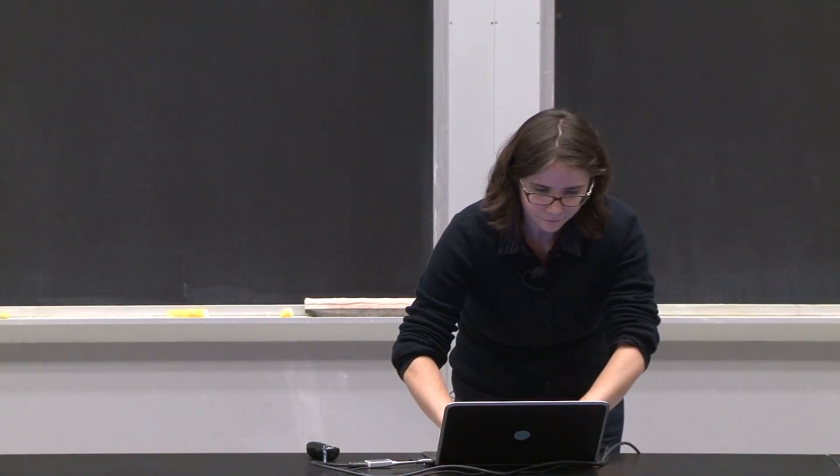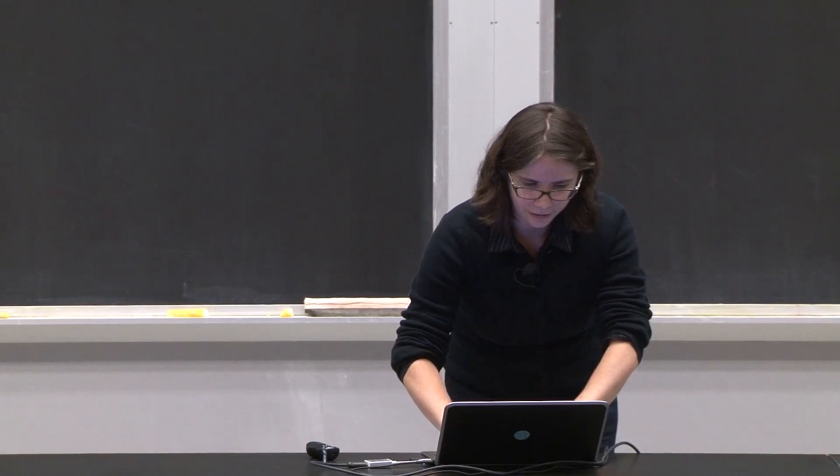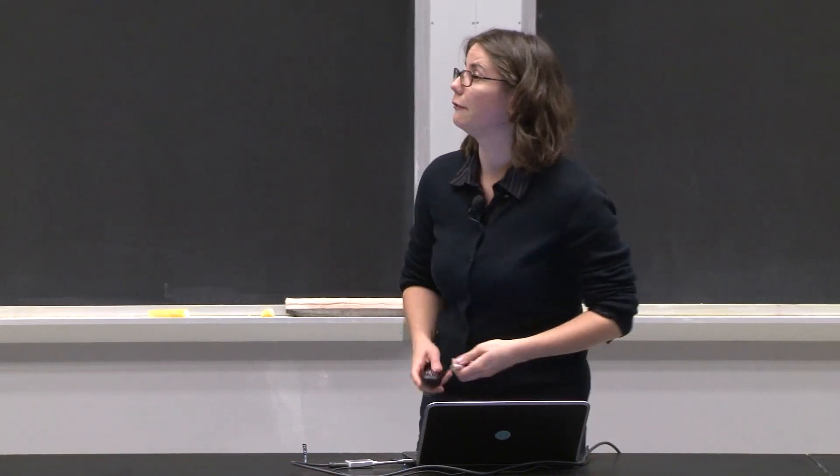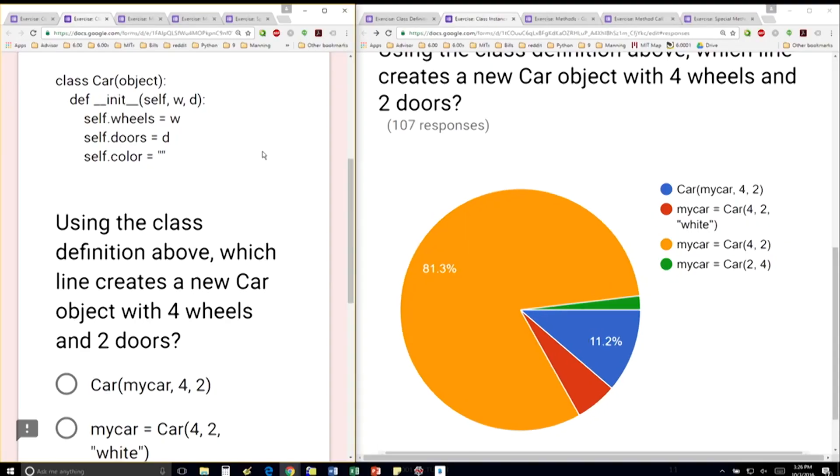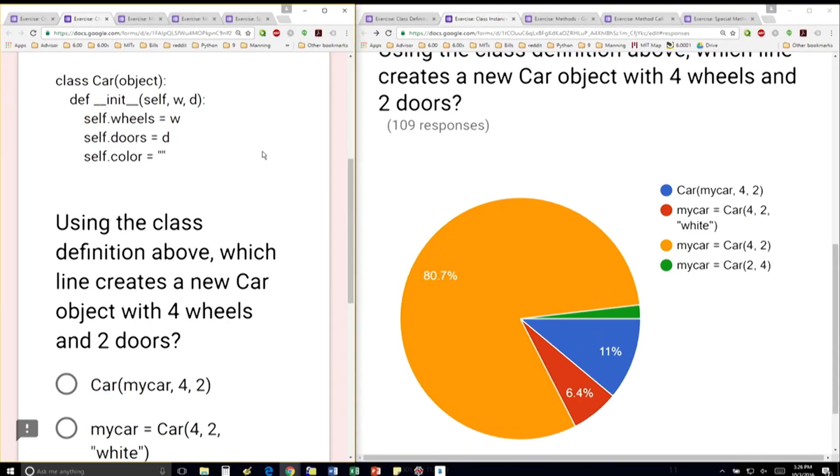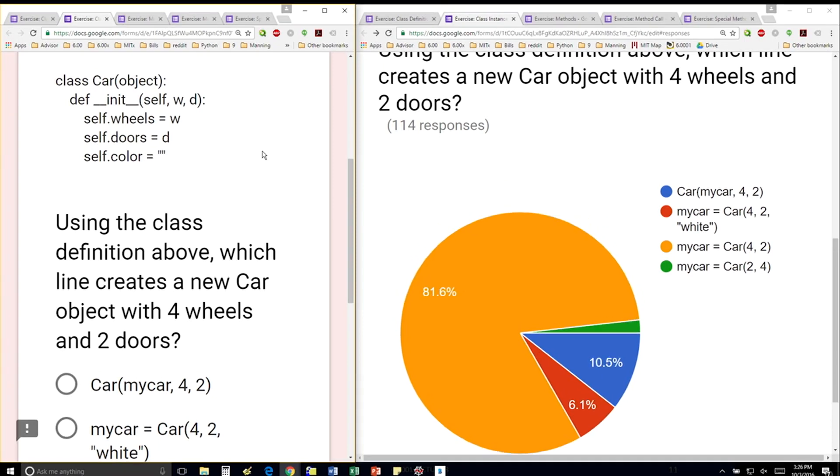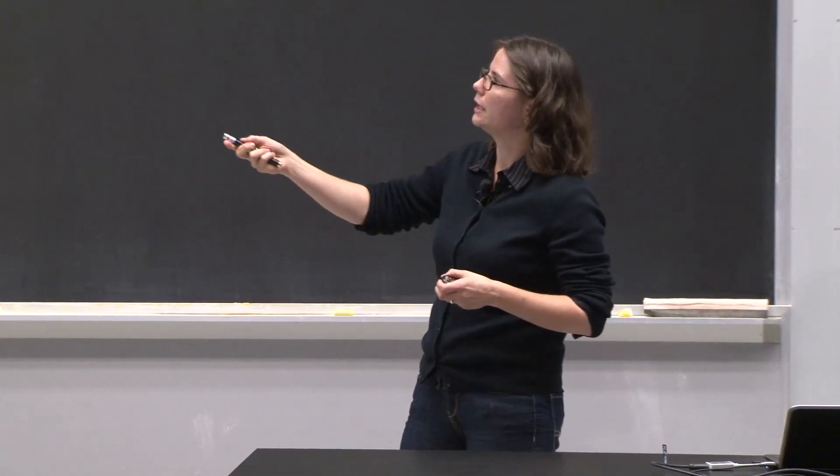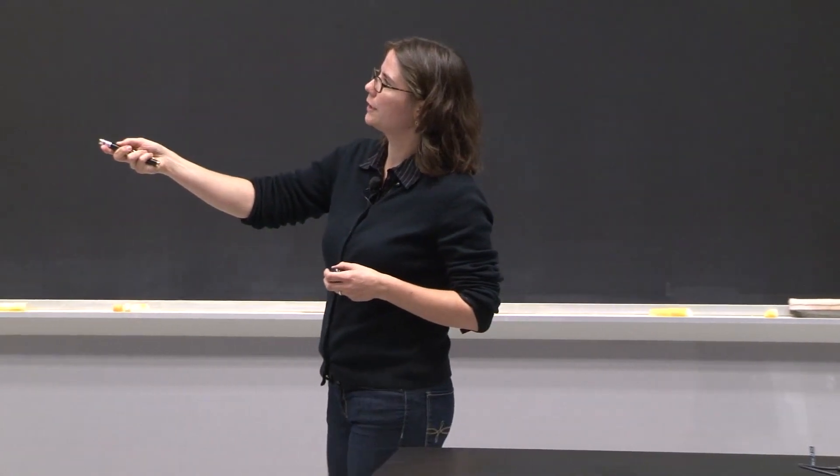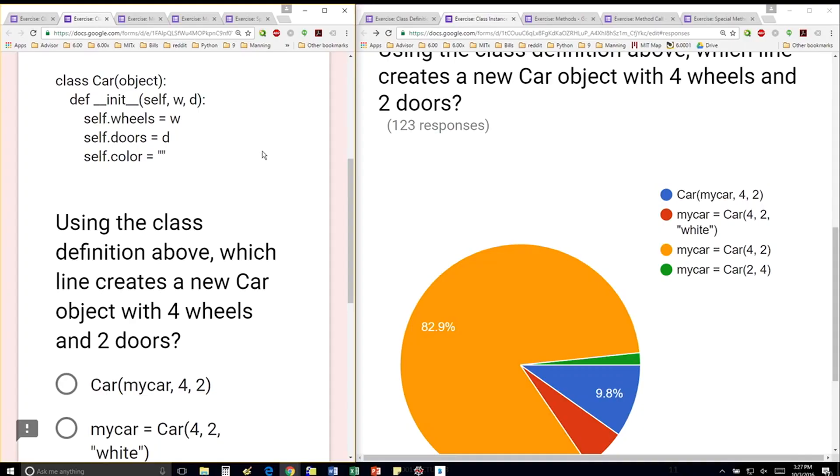We have this definition for the class object. I've created the init for you. Here I'm giving it self, which is the first thing you have to give it, and then two parameters, w and d. For an instance of a car, I'm going to assign the data attribute named wheels to whatever is passed in for w. Notice that they're not the same name. The data attribute for doors is going to be the value that's passed in for d.